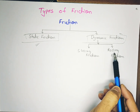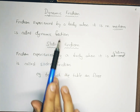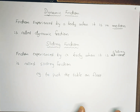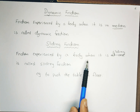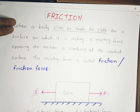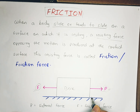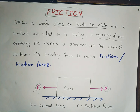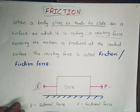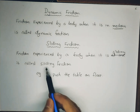Sliding friction is a type of dynamic friction. It is the friction experienced by a body when it is sliding over a surface or another body. For example, the box we have been discussing is sliding on the surface — it is not rolling or at rest. The friction experienced by that body during sliding is known as sliding friction.